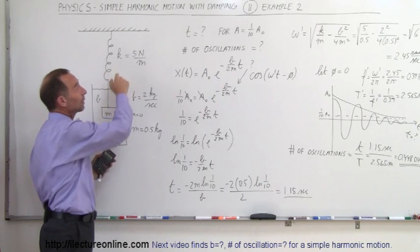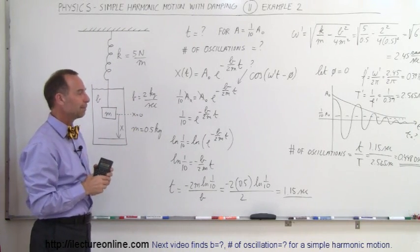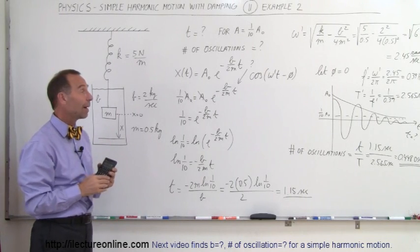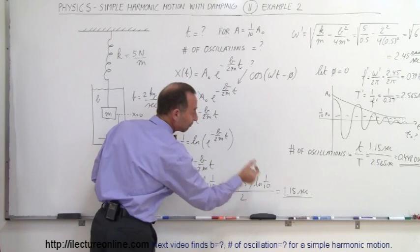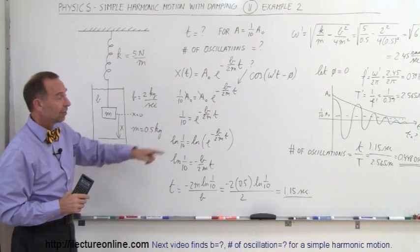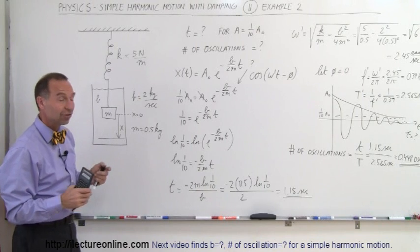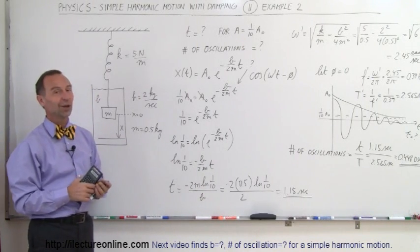But anyway, it's still a good example. That's how you figure out how long it takes to go to a small fraction of the original amplitude and figure out what the frequency is, the period of oscillations, and the number of oscillations in a given amount of time. So therefore, it's still a good example.